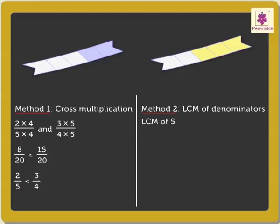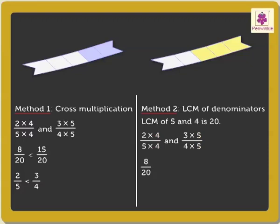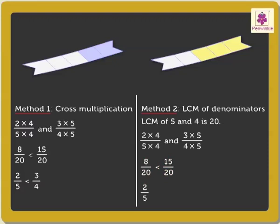Here the LCM of five and four is twenty. Next, we multiply the fractions with four and five respectively to get equivalent fractions. Now compare the like fractions. Here eight upon twenty is smaller than fifteen upon twenty, thus two-fifth is less than three-fourth.